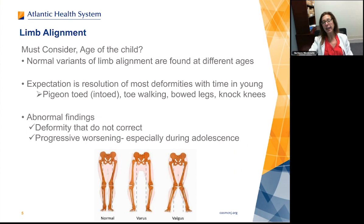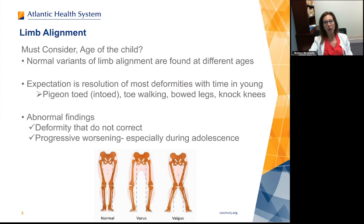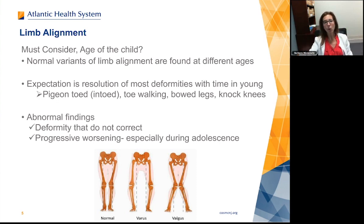You need to consider the patient's age when looking at their deformities to decide how serious they are or if they'll need intervention. There are normal variants at different ages that we expect to correct over time. Since we expect resolution of most deformities in the young, we're not going to get worked up about them. Things you see in the young — bow-legged, knock-kneed, in-toed, pigeon-toed, double-jointed, or toe-walking — are the same things you see in older kids.